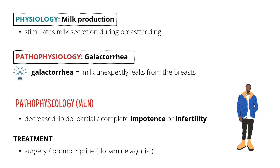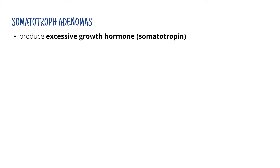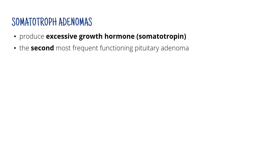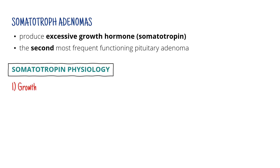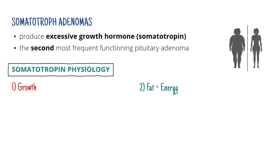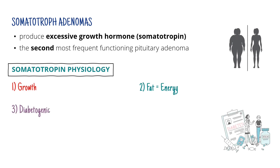Using the same method, let's continue with somatotroph adenomas. Somatotroph adenomas produce excessive amounts of growth hormone, or somatotropin, and they're the second most frequent type of functioning pituitary adenomas. Somatotropin has three major effects: it promotes growth, it helps to utilize fat as a source of energy, and it also has a diabetogenic effect.